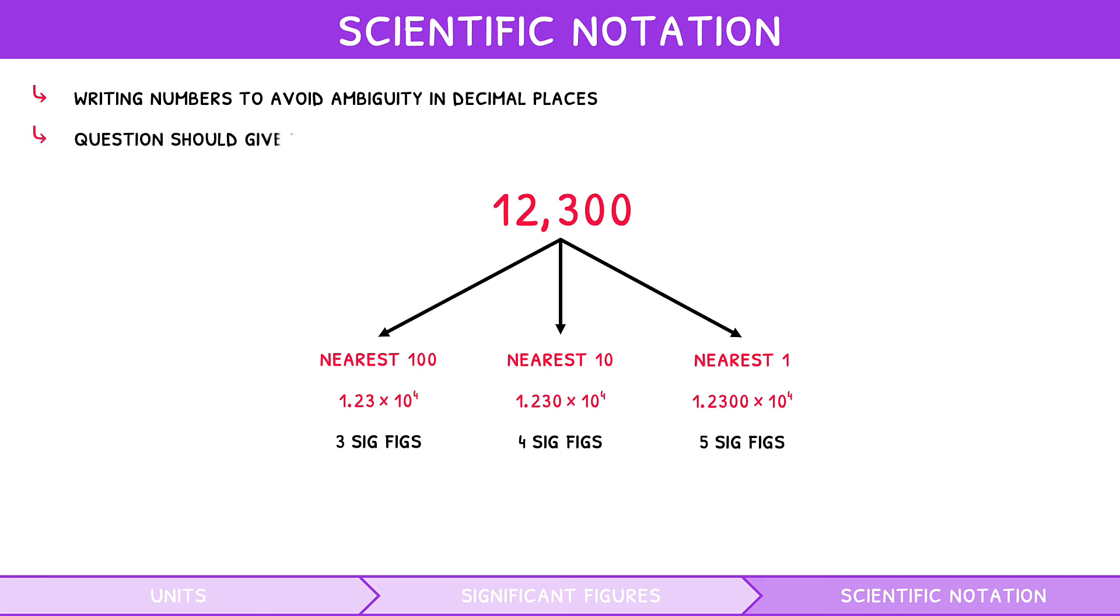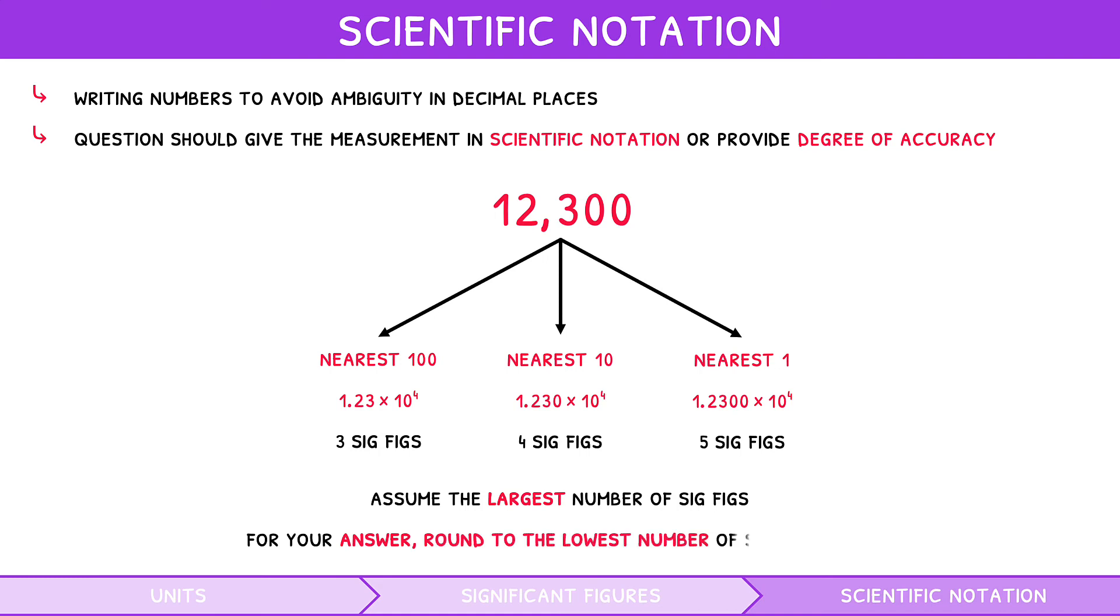The question should either give the measurement in scientific notation, or provide the degree of accuracy to which the answer was rounded. However, commonly, it does not. So, assume the largest number of significant figures when using values. However, as mentioned earlier, for your answer, round to the lowest number of significant figures given.